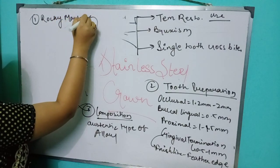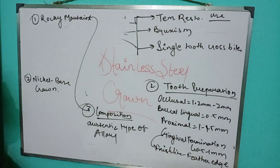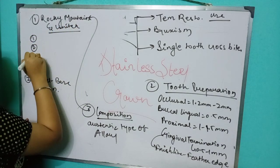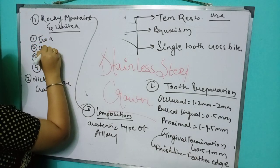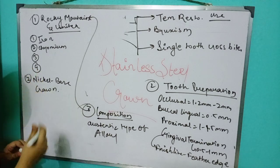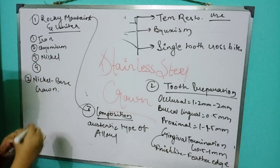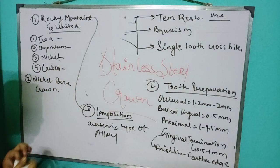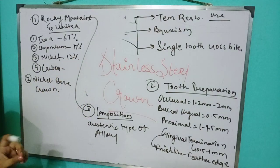Rocky Mountain, also known as Unity, contains iron, chromium, nickel, and carbon — abbreviated as ICNC. The percentages are: Iron (I) — 67%, Chromium (C) — 17%, Nickel (N) — 12%, and Carbon (C) — 1 to 1.5%. Please remember: ICNC for Rocky Mountain.